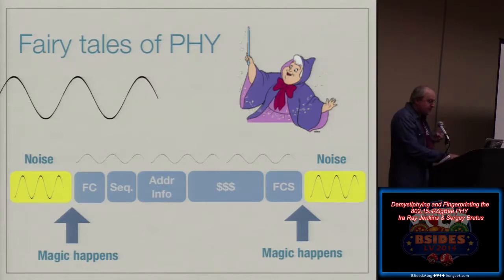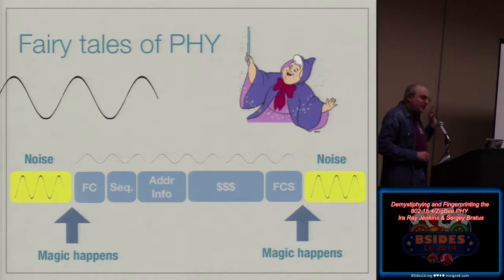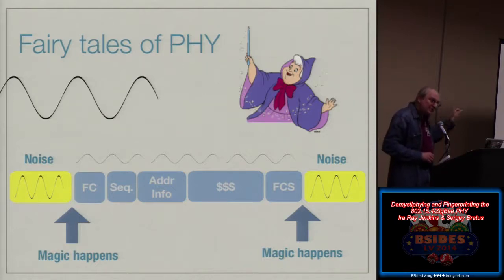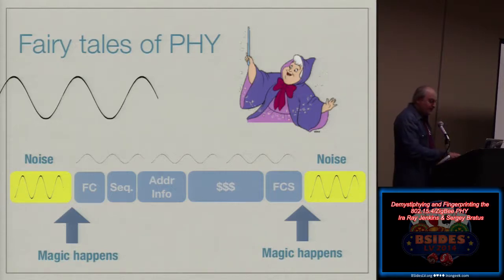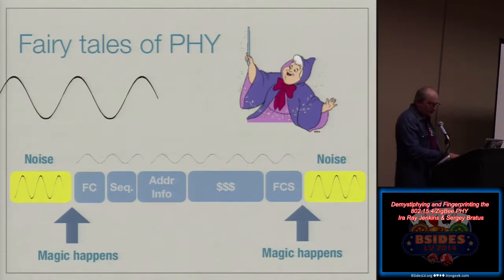You can fingerprint different chips from different vendors by those automata, by their differences. And this is where really interesting things start. For example, if you twist it just right, you can make chips of one maker hear a frame while none of the others do. Think of this as an IDS evasion technique, or a technique for scanning for just a particular building energy management system while leaving everyone else's stuff alone.